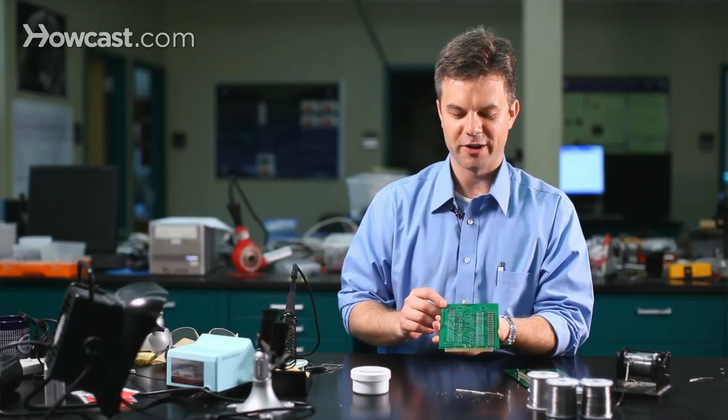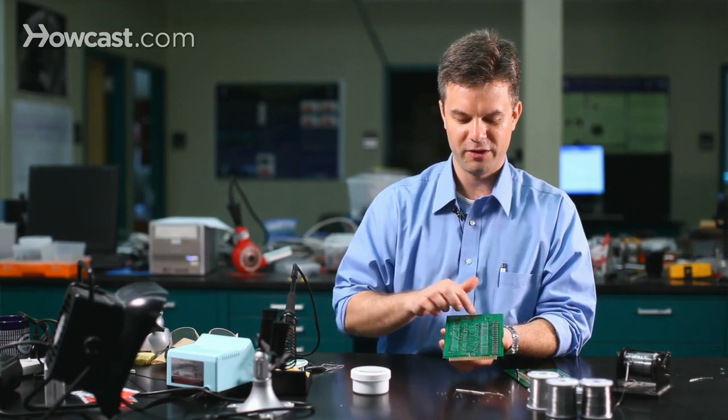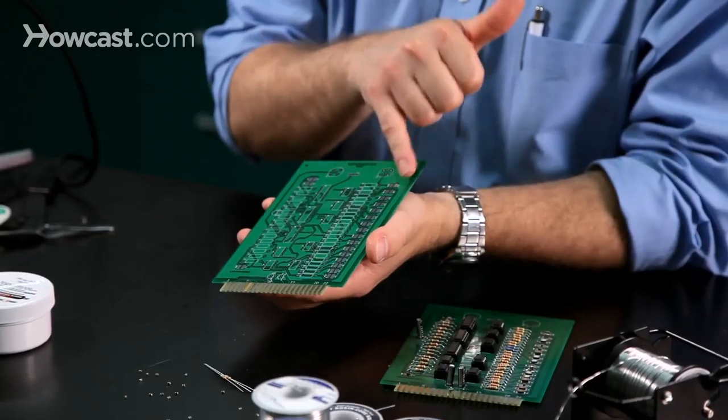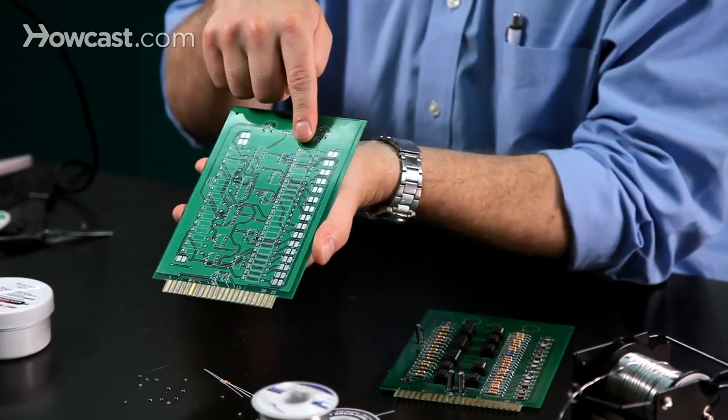Here's what a circuit board looks like without electronic components. As you can see, we have the green layers, you can see the outline of the copper underneath, and you can also see this white layer.